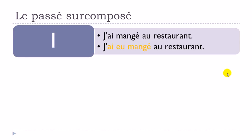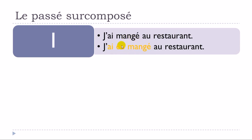Let's see how to make the passé surcomposé. First sentence in passé composé: j'ai mangé au restaurant. You use avoir or être at the present form, then add the participe passé. For the passé surcomposé: j'ai eu mangé au restaurant. The participe passé — mangé — does not change. What changes is the first part: avoir is now at the passé composé form instead of the present.